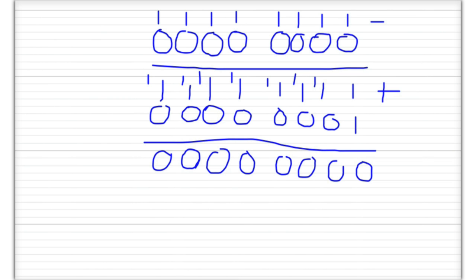We can check if a number is positive or negative just by looking at the leftmost bit. If the leftmost bit is a 1, it's a negative number; if the leftmost bit is a 0, it's a non-negative number — not strictly positive, since the number could be zero, as in this case.